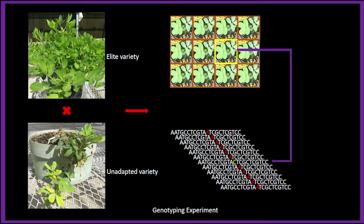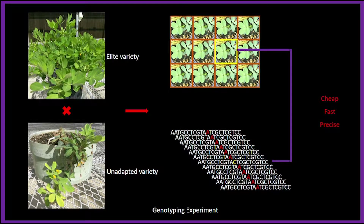In contrast to conventional breeding, marker-assisted selection reduces costs, while increasing the speed and also the precision of a breeding experiment. Now I am going to give you an overview of a typical genotyping experiment.